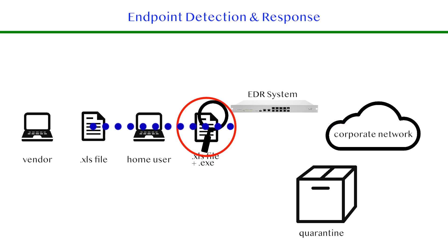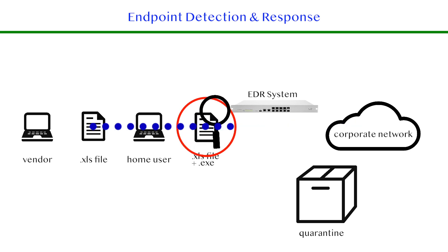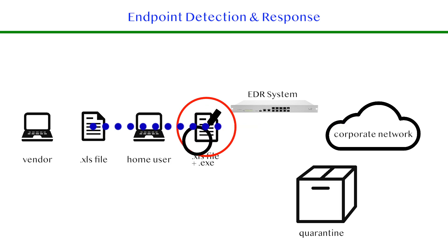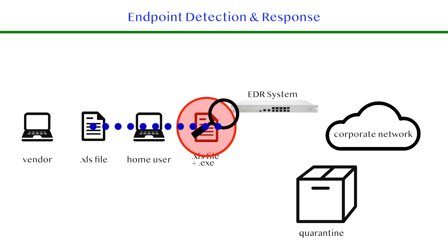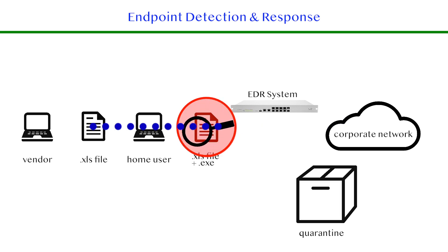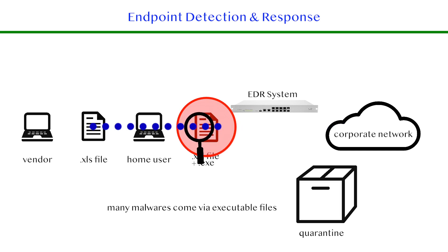Many cyber criminals today use the file attachment as their host to bring malware into your system. In the illustration we're showing you now, the EDR system is scanning an email from a legitimate user with what appears to be a normal Excel attachment. However, when the file is scanned, it notices that there's an executable file installed on the spreadsheet. The EDR is asking: was that executable file part of the original document, or is this something new that's come across? It takes a critical look because the EDR system knows that many of today's threats can come on an executable file.